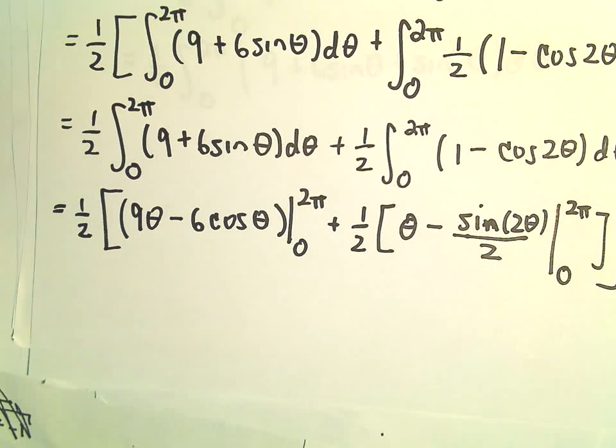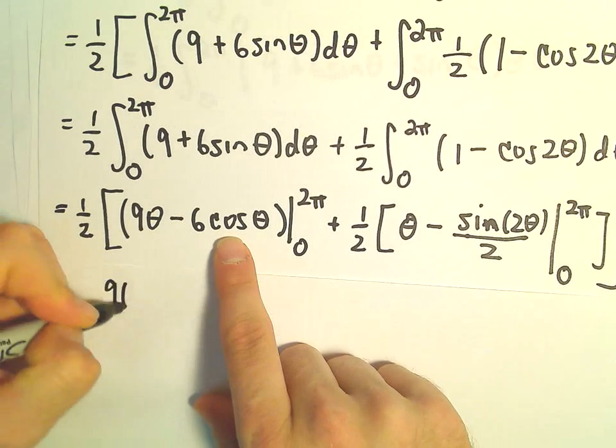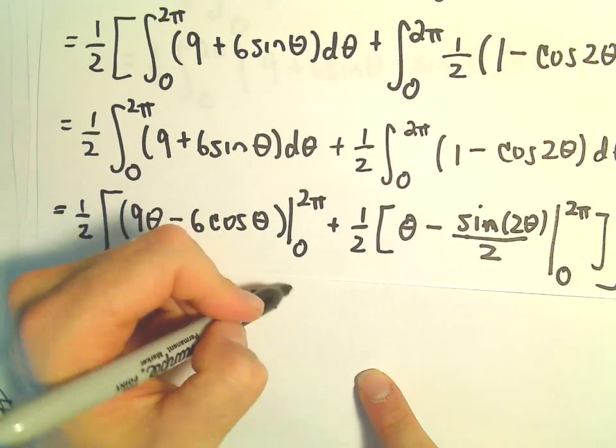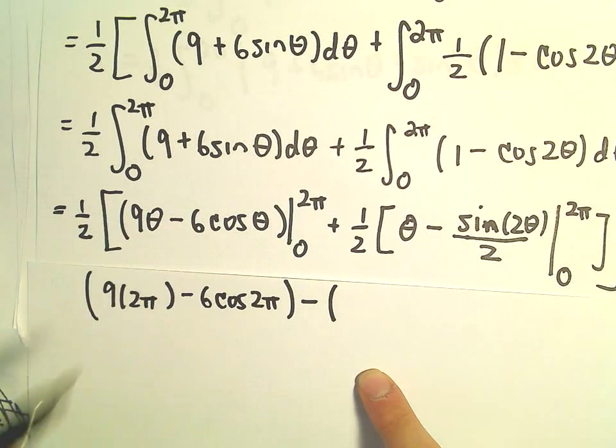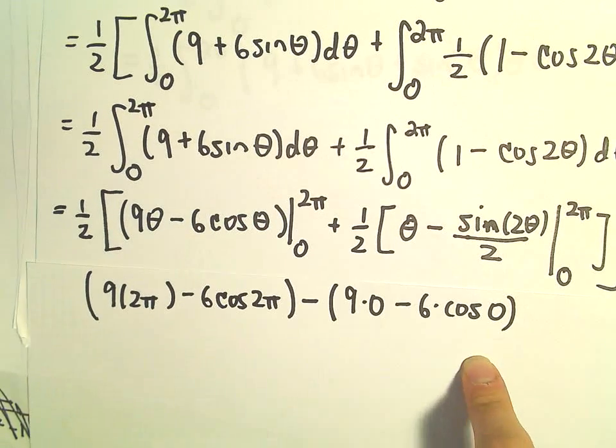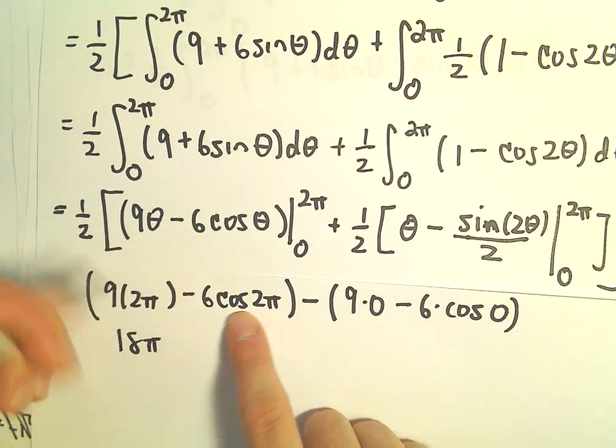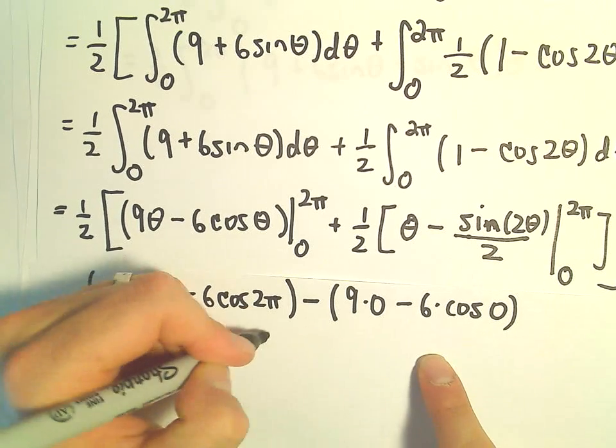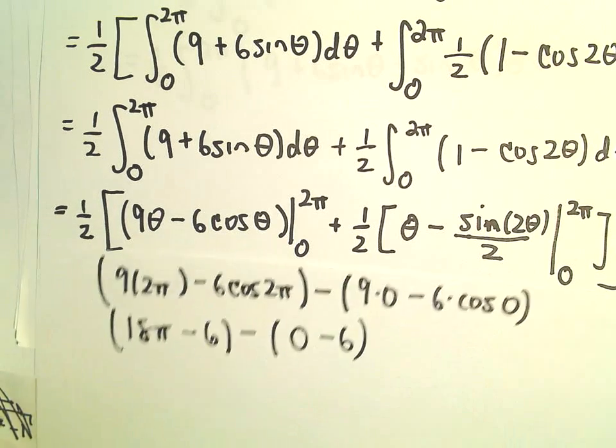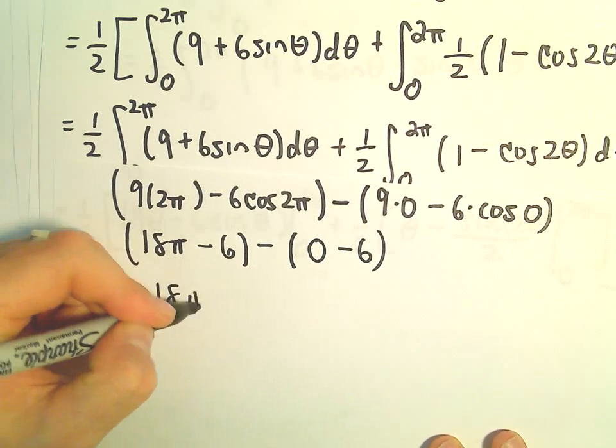I'm just going to do the one in this first part. So 9 theta minus 6 cosine theta. We would get 9 times 2 pi minus 6 times cosine of 2 pi, that would be our upper limit. Minus our lower limit, so we would get 9 times 0 minus 6 times cosine of 0. That's 18 pi. Cosine of 2 pi is going to be 1, so we have minus 6. We would have 0. Cosine of 0 is 1, so we'll have minus 6. It looks like we'll have negative 6 plus 6. So it looks like we're going to get 18 pi.